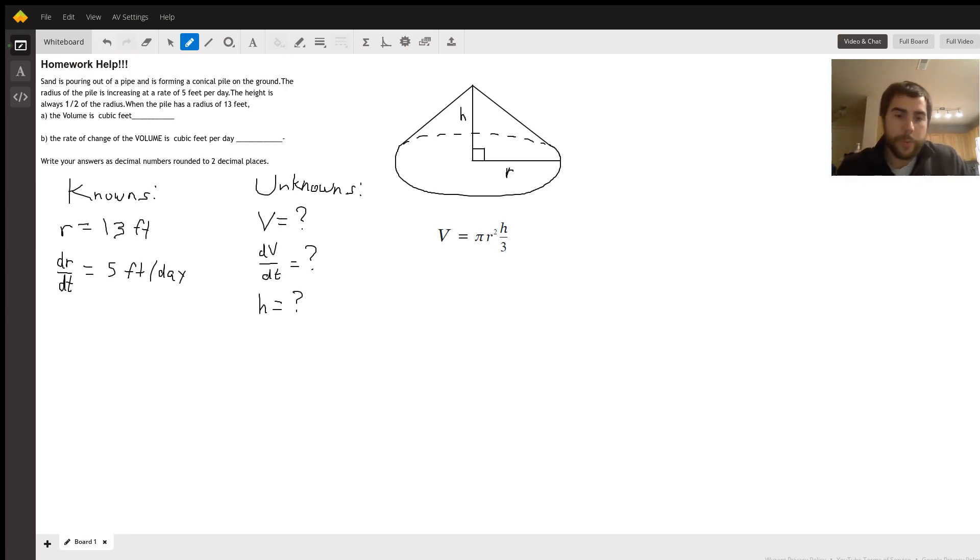There's a number of ways to approach this problem, but I think the easiest way: the first thing I did is I drew the cone just to visualize it. Really, you want to write down what you know and what you don't know in the problem. So we're given that the radius is 13 feet. It says so right here. And we're also given that the radius is increasing at a rate of five feet per day. So that's a rate of change, which tells us it's the derivative with respect to time. So dR/dt, we have five feet per day.